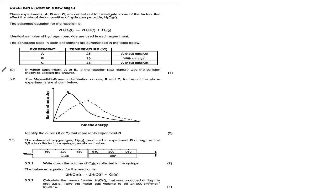Question 5.2: the Maxwell-Boltzmann distribution curves X and Y for two of the experiments are shown. Identify the curve that represents experiment C. Experiment C involved an increase in temperature. An increase in temperature causes the graph to skew more to the right, so curve Y represents the effect of an increase in temperature.